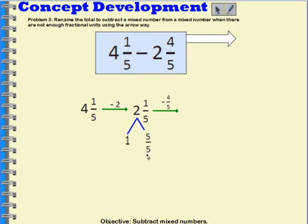And then I can subtract 4 fifths. When I do, it will leave me with 1 fifth. So I take that 1 fifth, and this 1 fifth. And it would leave me with 1 and 2 fifths.